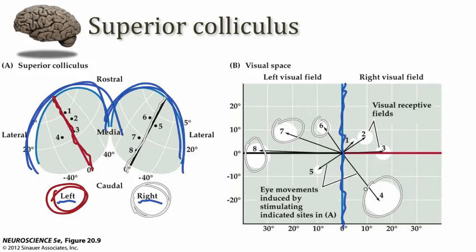If that same site in the superior colliculus is stimulated, what happens is that we would make a saccadic eye movement to the center of that visual receptive field. This implies some kind of registration between the sensory map of the world and the map for saccadic eye movements. One might imagine this registration is simply a direct translation of the sensory frame into a motor frame, but we know motor systems work in a more complicated way — encoding not a Cartesian frame but rather the intention for the movement, or what we call the motor error: the movement necessary to achieve the goal, which in the case of saccades is to acquire a new fixation target.